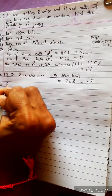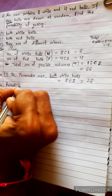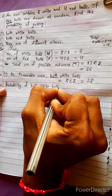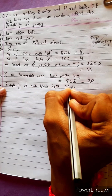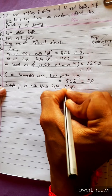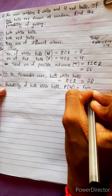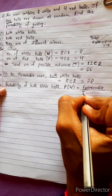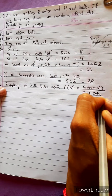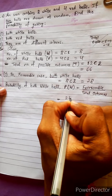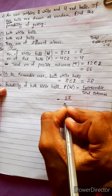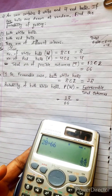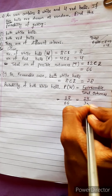Now, probability of both white balls. The formula is: favorable cases divided by total number of possible outcomes. Favorable case is 28, possible outcomes is 66. So 28 by 66 simplifies to 14 by 33. This is the probability of drawing both white balls.